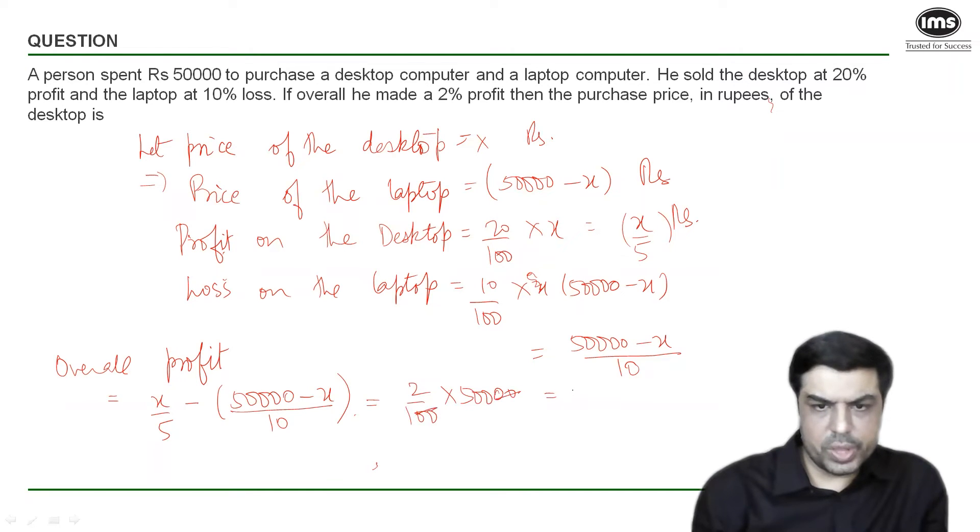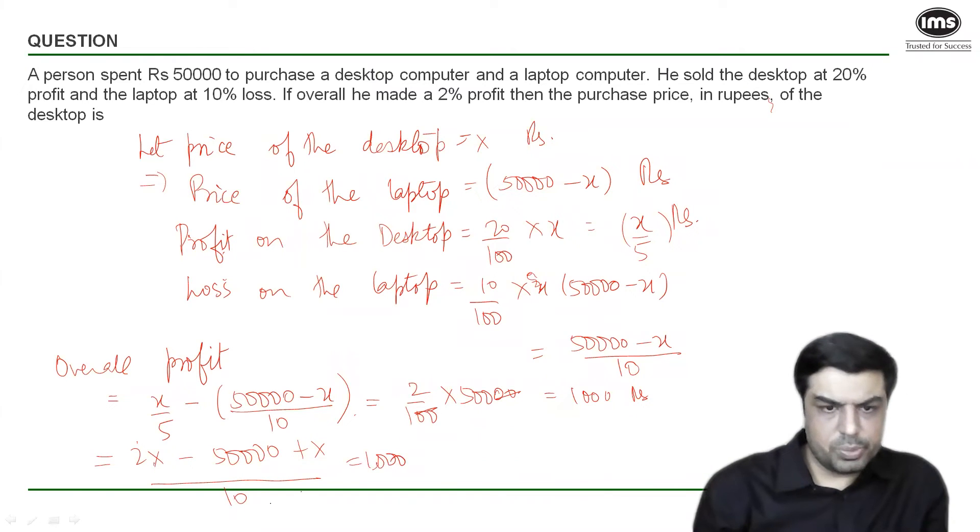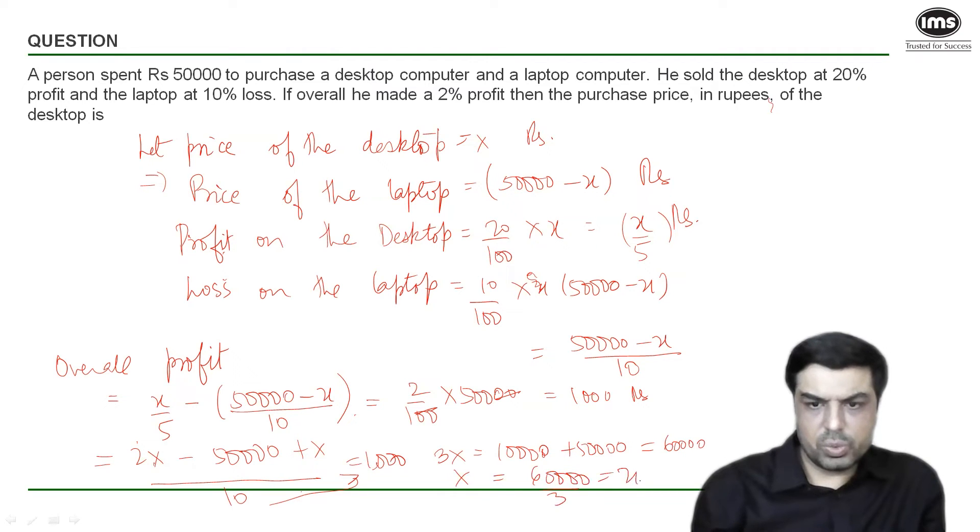If you take LCM on the left-hand side, we get 2x minus (50,000 plus x) divided by 10 equals 1,000. Cross multiply and solve for x. From here I get 3x equals 10,000 plus 50,000, which is 60,000, and x equals 60,000 by 3, which is 20,000.